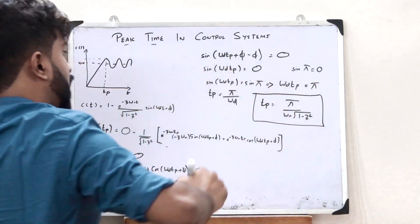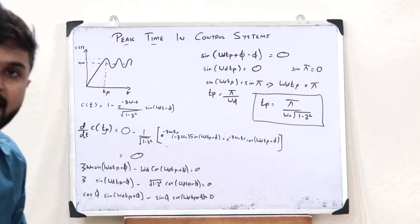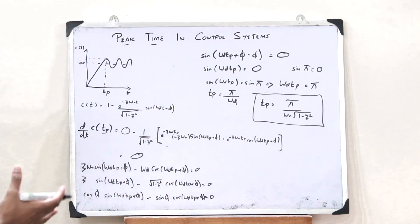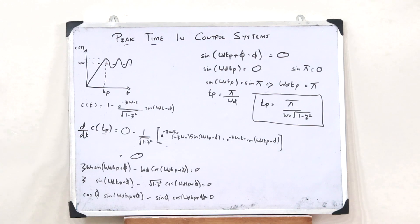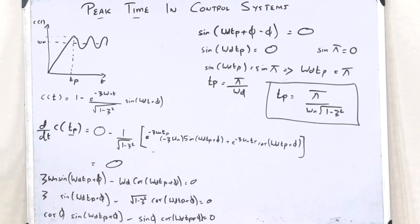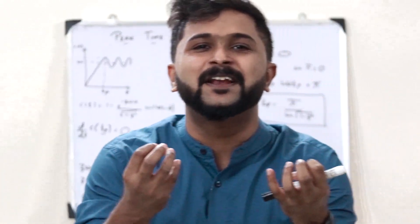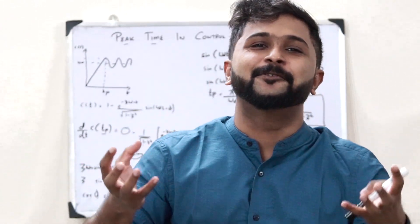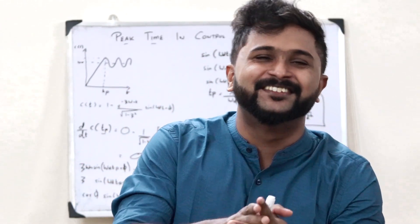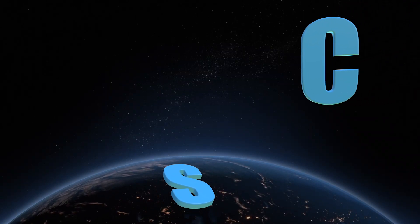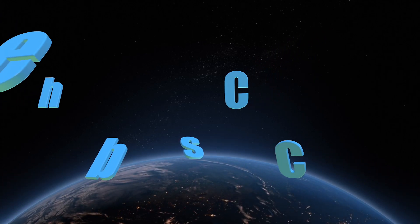This is the value of the required peak time in the case of a control system. This is simply the expression for the peak time: t_p = pi divided by omega_n times root of 1 minus zeta squared. I hope you now have a clear understanding of what is referred to as peak time in the case of a control system.